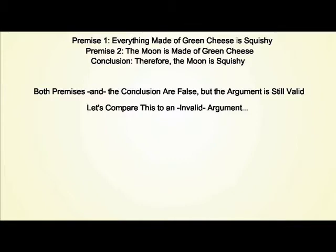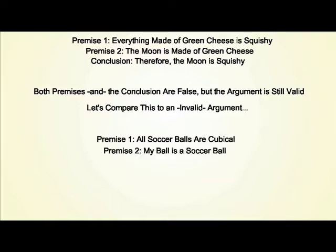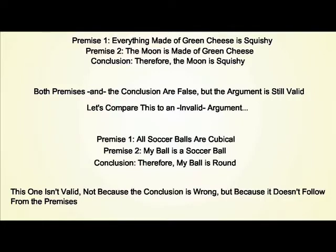By contrast, look at an invalid argument. Premise 1: All soccer balls are cubical. Premise 2: My ball is a soccer ball. Conclusion: Therefore, my ball is round. This argument fails — not because the conclusion is wrong, but because it's not a valid argument. The conclusion doesn't follow from the premises.